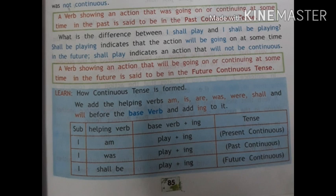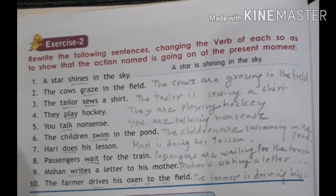Learn how continuous tense is formed. We add the helping verb am, is, are, was, were, shall, or will before the base verb and add -ING. For present continuous: subject 'I' + helping verb 'am' + base verb 'play' + ING = 'I am playing.' For past continuous: 'I' + 'was' + 'playing.' For future continuous: 'I' + 'shall/will' + 'be' + 'play' + ING = 'I shall be playing.' In continuous tense we always use the -ING form of the verb.